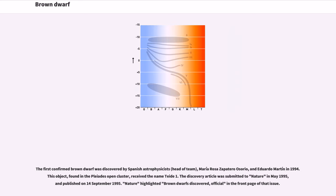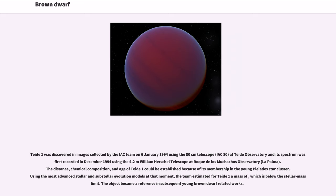The first confirmed brown dwarf was discovered by Spanish astrophysicists María Rosa Zapatero Osorio and Eduardo Martín in 1994. This object, found in the Pleiades open cluster, received the name Teide 1. The discovery article was submitted to Nature in May 1995 and published on September 14, 1995. Nature highlighted brown dwarfs discovered official on the front page of that issue. Teide 1 was discovered in images collected by the IAC team on January 6, 1994 using the 80 centimeter telescope at Teide Observatory, and its spectrum was first recorded in December 1994 using the 4.2 meter William Herschel Telescope.